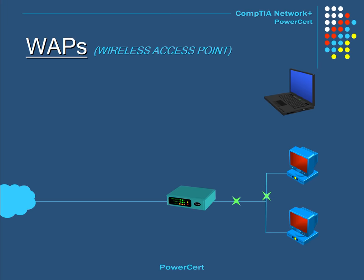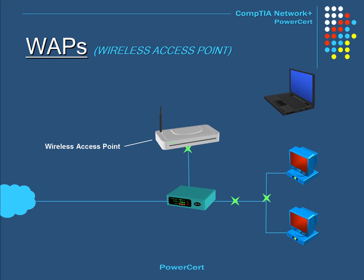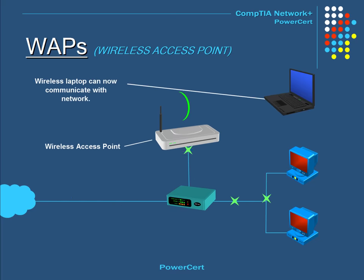A wireless access point is basically a wireless hub used by wireless devices. It connects to a wired network and relays data between the wired network and the wireless device for communication purposes. In this illustration, you see a wireless access point wired to a network so that a wireless laptop can communicate with the network.